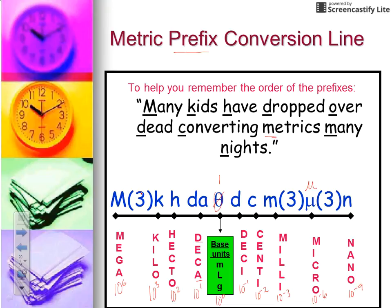Notice there are jumps of 3 on the conversion line. The 3's come after every M word as you read from left to right. So after mega, there's a jump of 3. After milli, there's a jump of 3. After micro, there's a jump of 3.